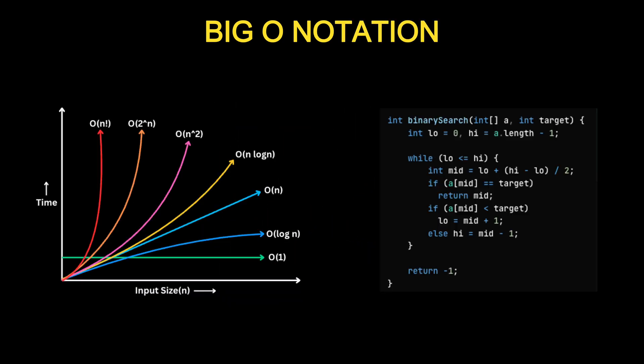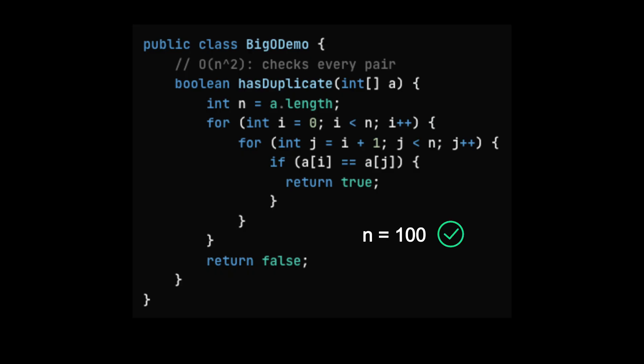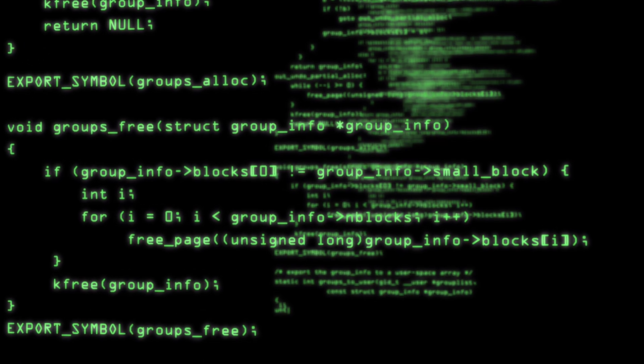Big O Notation: A way to measure how efficiently your code performs as the input size grows. You've probably seen code that works perfectly on small inputs, but slows down, crashes or times out when the input becomes large.